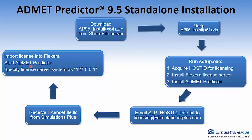When starting Admet Predictor for the first time, it's going to prompt for a couple of things: one is whether you have a license server or a file. Typically you want to point to the license server, and then it's going to prompt you for the IP address or the name of the computer that runs the licensing server. In this case it's going to be local, so you can either enter 127.0.0.1. If that doesn't work, you can try localhost. Once you've entered this, Admet Predictor will start up.